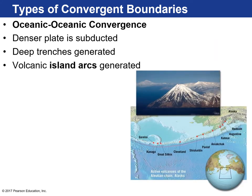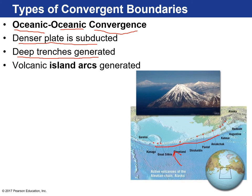You can have a scenario where two ocean plates collide — oceanic-oceanic convergence. The denser ocean plate subducts and you generate deep ocean trenches. Here are the Aleutian Islands off the coast of Alaska and the deep ocean trench. The Pacific Plate is subducting underneath this ocean plate, melts are being generated, and they make their way through the overriding ocean crust, showing up as beautiful volcanic island arc features that rise up from the ocean floor to create volcanic islands. We call this an island arc.